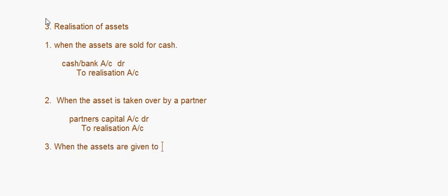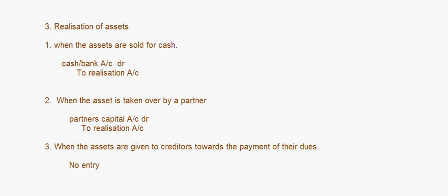When assets are given to any creditor towards payment of their dues — for example, if the creditor has to be paid ten thousand rupees and there is stock worth ten thousand, the creditor is given that stock — in that case you will not make any separate entry, because the assets and liabilities are already transferred. This applies to both recorded and unrecorded assets; you deal with them in the same way.